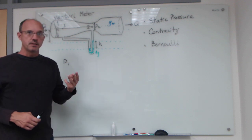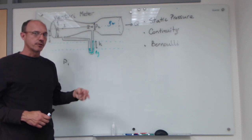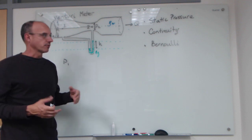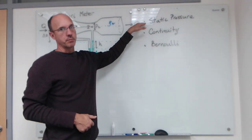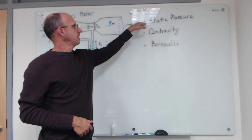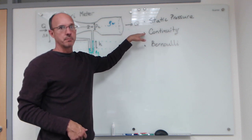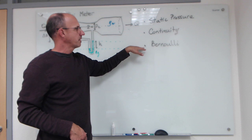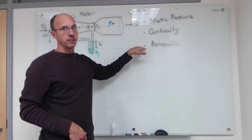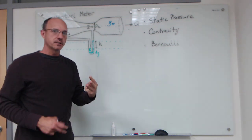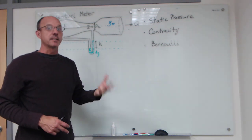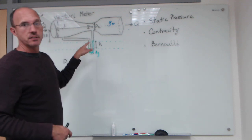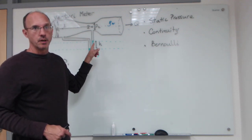There are three fundamental principles used to develop this mathematical model for the flow. One is a static pressure analysis, the second principle is the continuity principle — mass conservation — and the third idea is the Bernoulli equation. By combining those three things we can analytically determine the volumetric flow rate as a function of the manometer reading.